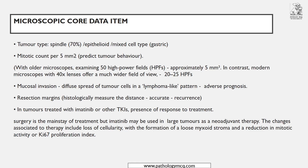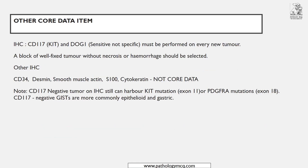Now for IHC co-data items: CD117 and DOG1 are the mandatory markers — they are sensitive but not specific. They are performed for any GIST. Other markers such as SMA, desmin, and mutational studies are performed only on request. So CD117 and DOG1 are core data items; all other IHC markers are done only on request.